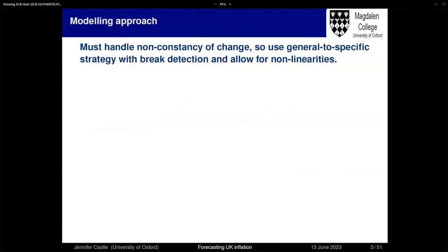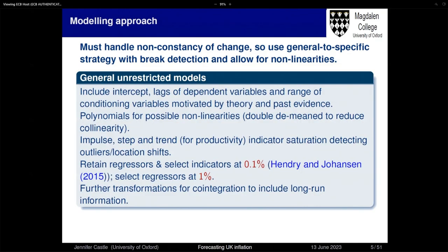What's the modelling approach? The data is really highly volatile, so we're going to use a general-to-specific strategy, allowing for break detection over the entire period and allowing for non-linearities — structural breaks, non-linearities, and unknown sets of explanatory variables. We start by building a general unrestricted model for each conditional model, including intercepts, lags of the dependent variables, and a huge range of conditioning variables motivated by theory and past evidence. Then we include polynomials for possible non-linearities, which we map to smooth transition models.